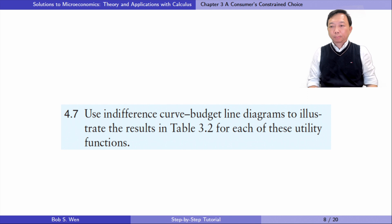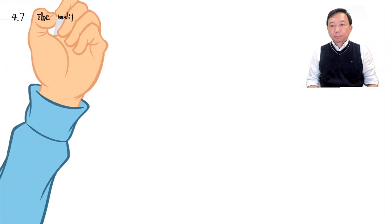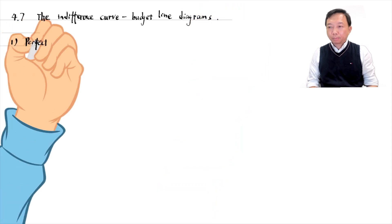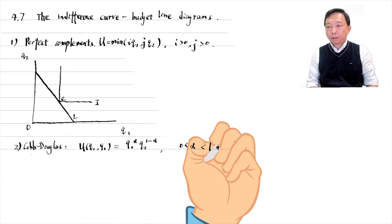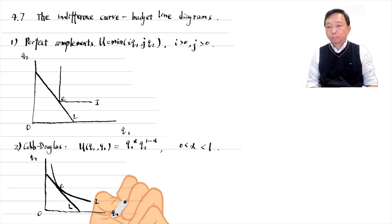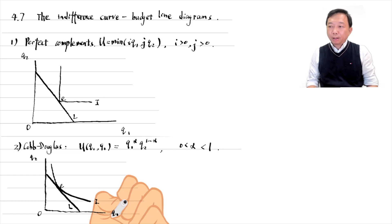Let's do exercise 4.7: use indifference curve and budget line diagrams to illustrate the results in table 3.2 for each of these utility functions. In the first case of perfect complements, the indifference curves are right angles. The optimal bundle E is on the highest indifference curve that touches the budget line — it is an interior solution. In the second case of a Cobb-Douglas utility function, the indifference curves are convex to the origin. The optimal bundle E is the point where the indifference curve is tangent to the budget line, and will not hit the two axes. The optimal bundle E is an interior solution.